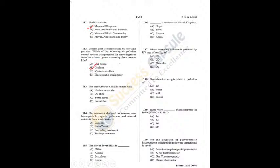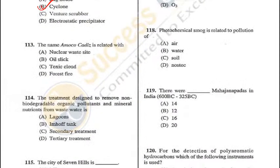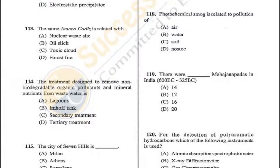Question 113: The name Amoco Cadiz is related to an oil spill — the greatest marine pollution known until March 1978. It is the name of a ship — B is the correct answer. Question 114: The treatment designed to remove non-biodegradable organic pollutants and mineral nutrients from wastewater is secondary treatment — C is the correct answer.